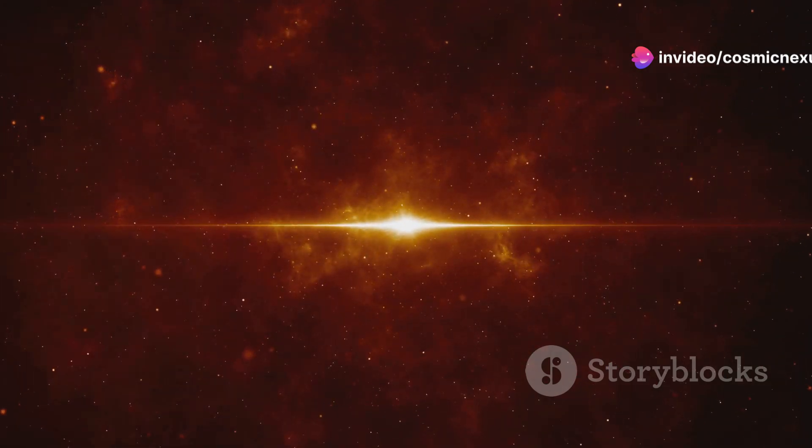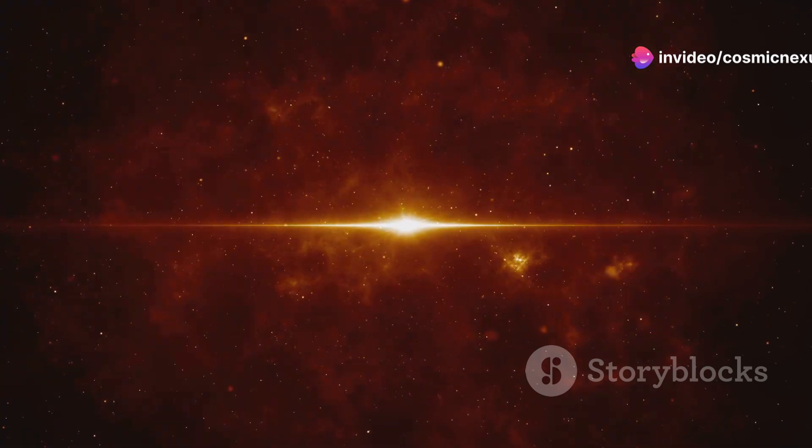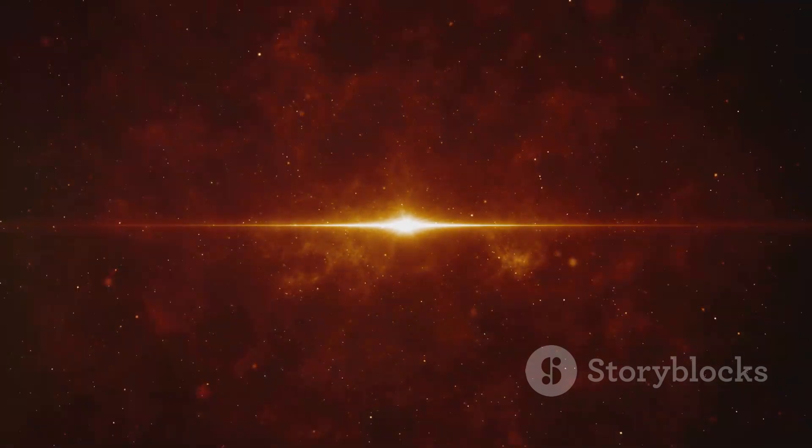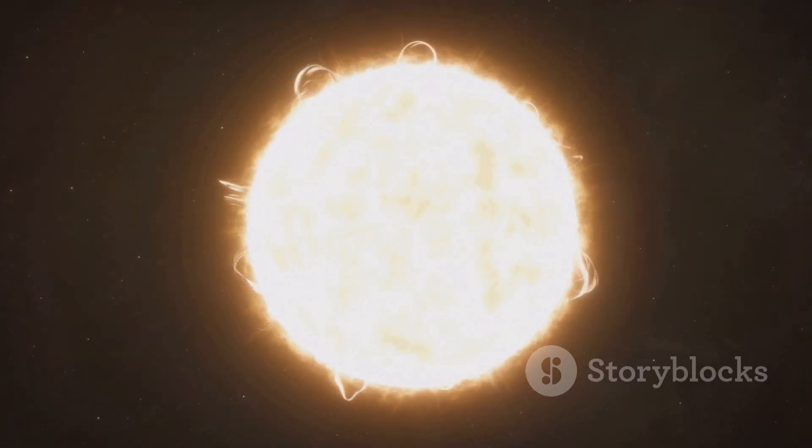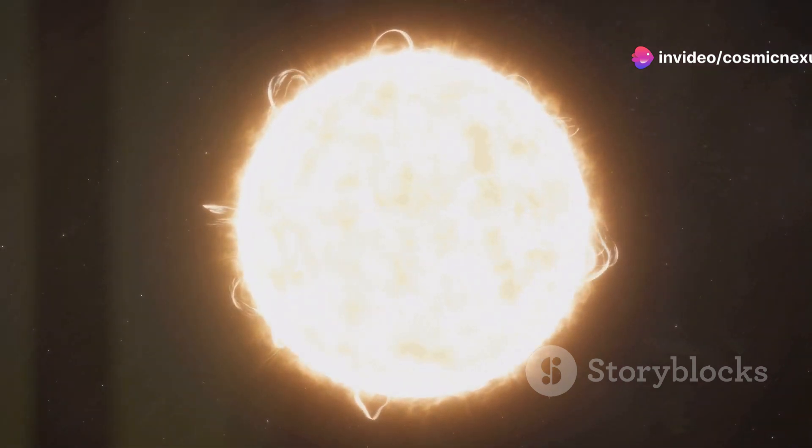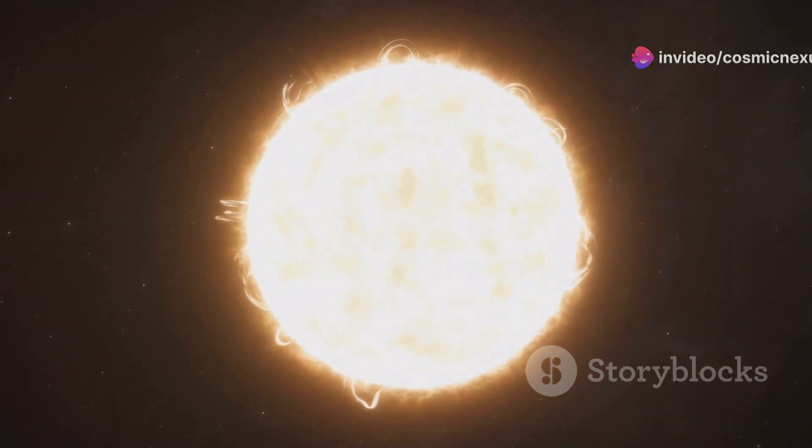Betelgeuse is a red supergiant, a star nearing the end of its life. Red supergiants are among the largest stars in the universe, and Betelgeuse is a prime example. It's far larger than our own sun. In fact, Betelgeuse's diameter is about 1,000 times that of the sun, making it a true giant in the cosmic landscape.